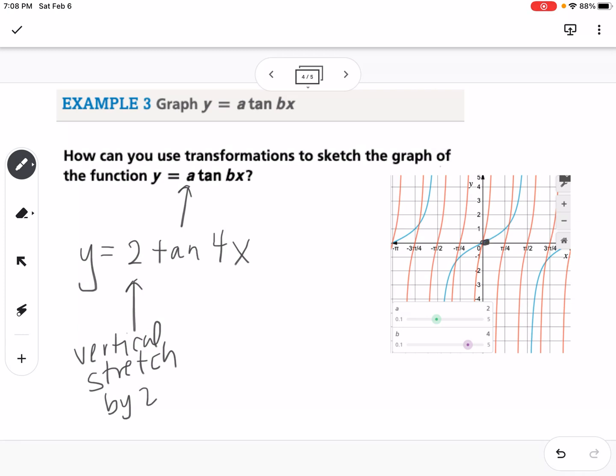So here, if we kind of focus on our original graph, if you're going from your zero to the asymptote, if it has a value of 1, you would go halfway between the zero and the asymptote, and you would go up 1 and down 1. But if it's 2, that means you would go halfway between the zero and the asymptote, and you would go up 2 or down 2.